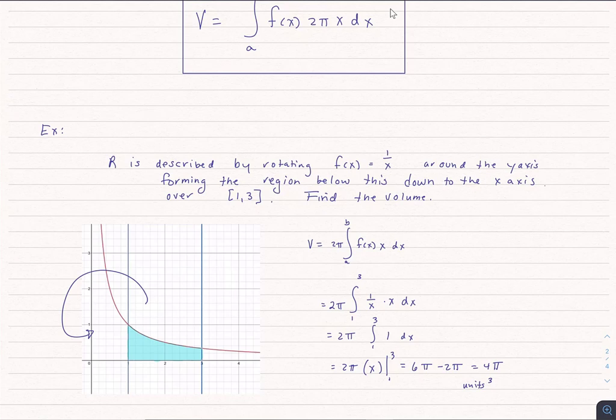When we multiply that by x, we just get 1, which is the easiest integral. Maybe e to the x is a little easier, but this is pretty close. When we finish the integration, evaluating it at 1 and 3, we get that this is equal to 4 pi. And it would be units cubed because we're talking about volume.